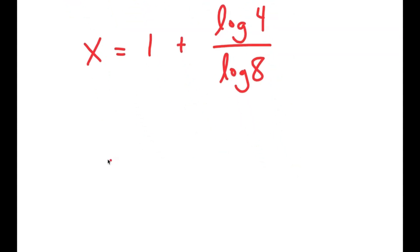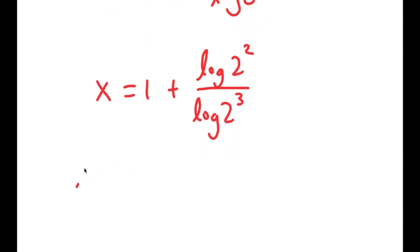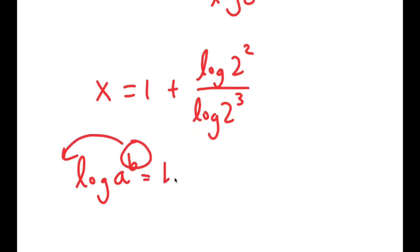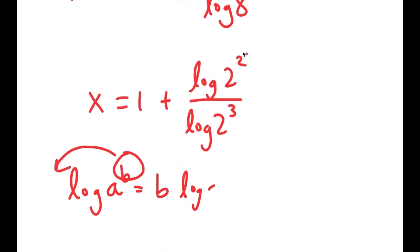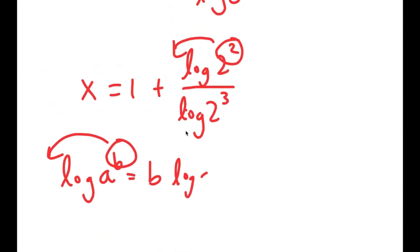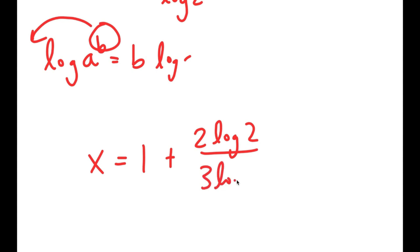Now, log of 4 is the same thing as log of 2 squared, and log of 8 is the same thing as log of 2 to the power of 3. If I have something in the form log of a to the power of b, I can move b to the front. So I get x is equal to 1 plus 2 times log 2 over 3 times log 2.